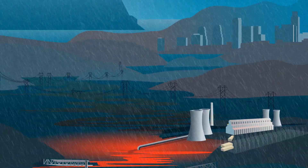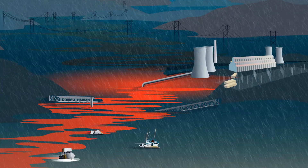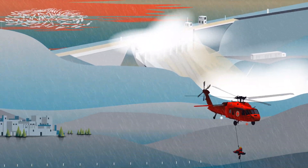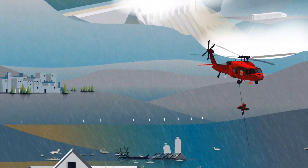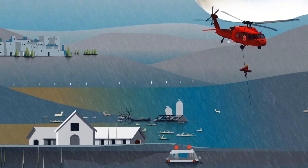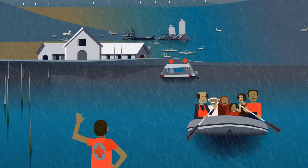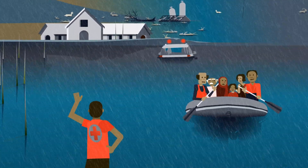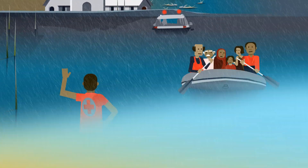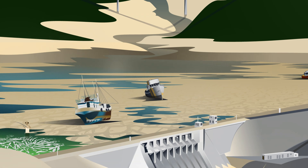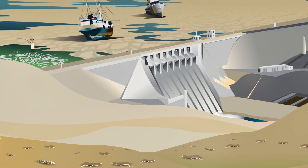Climate change is already altering weather patterns, making floods and droughts more common, more severe, and much harder to predict. Around the world, floods and droughts devastate millions of lives, undermine the economy, and add more challenges to transboundary water management.